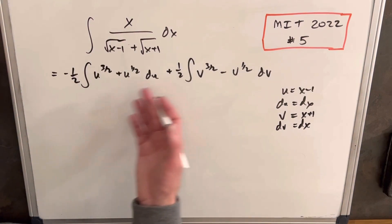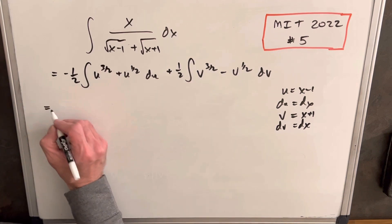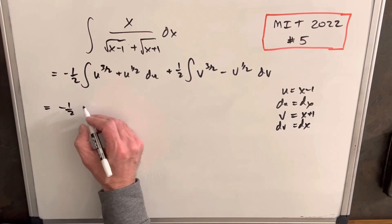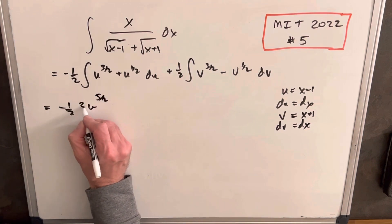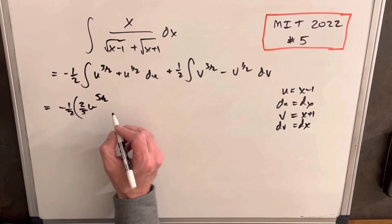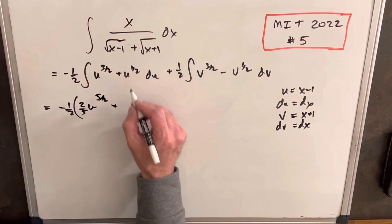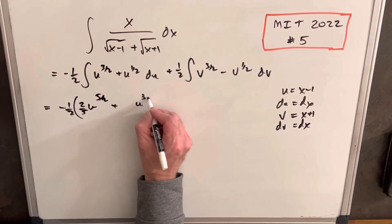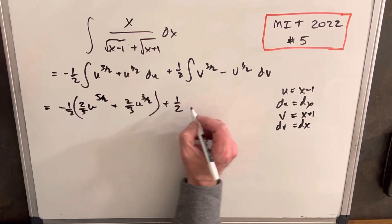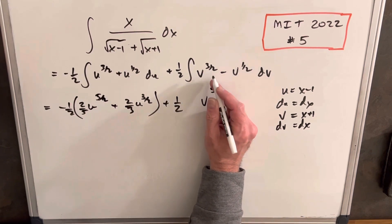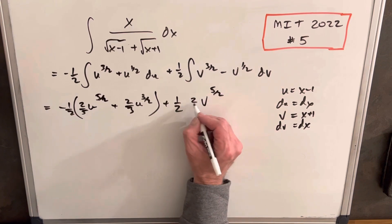And now we just have two integrals where we can use the power rule across the board. So we're going to have minus 1 half. And so u to the 3 halves is going to be 5 halves. We'll bring a 2 fifths here. Here, we'll make parentheses. And then this one, we're going to have u to the 3 halves, 2 thirds, plus 1 half v to the 5 halves, 2 fifths.